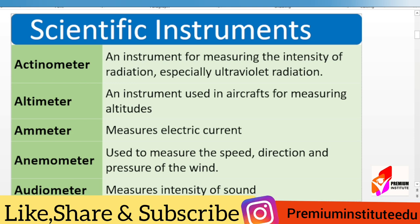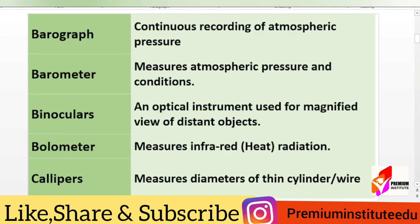Fifth, audiometer — measures intensity of sound. Sixth, barograph — continuous recording of atmospheric pressure. Seventh, barometer — measures atmospheric pressure and conditions. Eighth, binoculars — an optical instrument used for magnified view of distant objects.